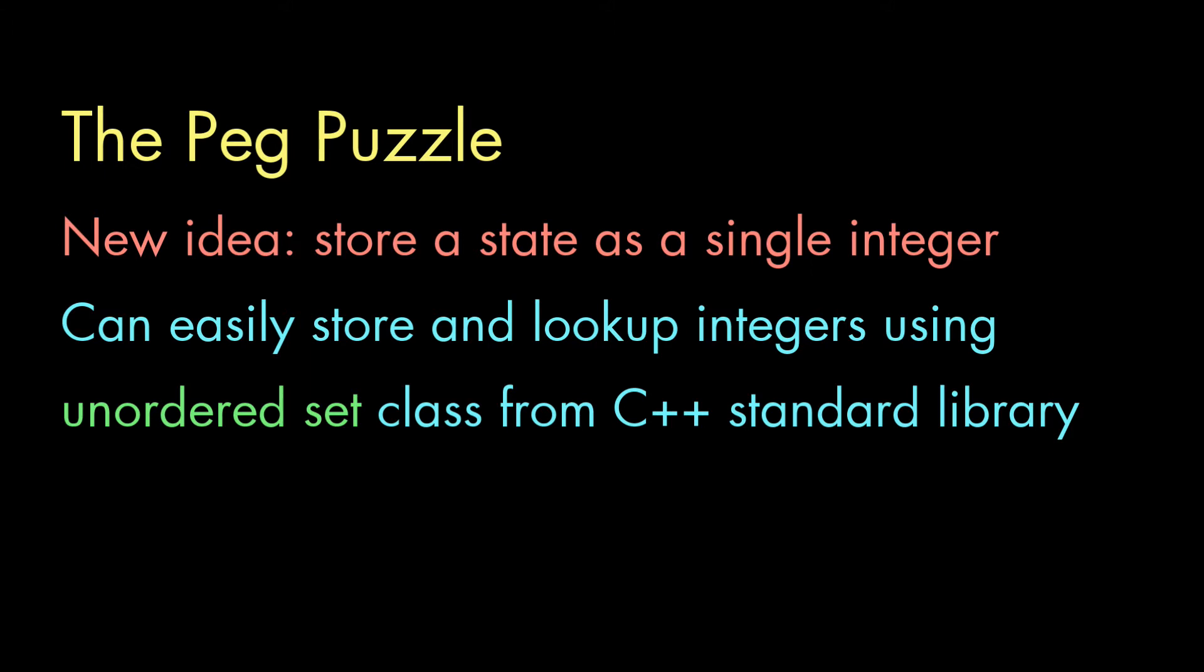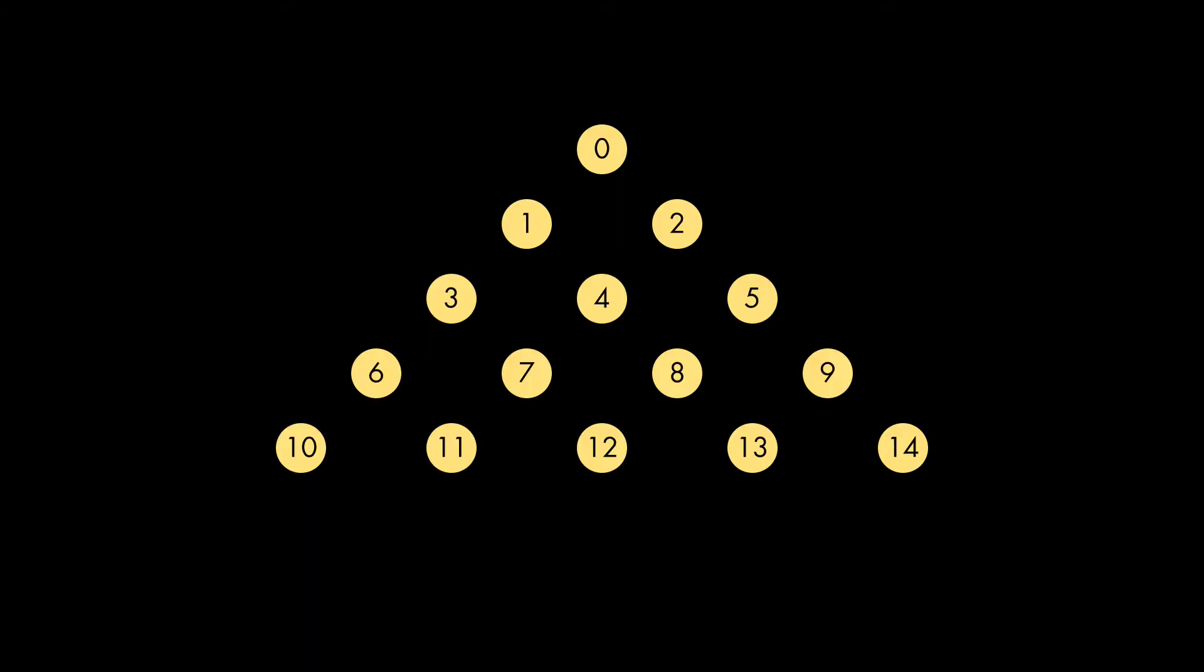Now, how to find legal moves? Basically, I need to look at every position, and if there's a peg in that position, I have to check each direction to see if there's a peg I can jump, which means there's a peg in the adjacent position in that direction, and then there has to be an empty hole on the other side. But I need a simple way to do that.